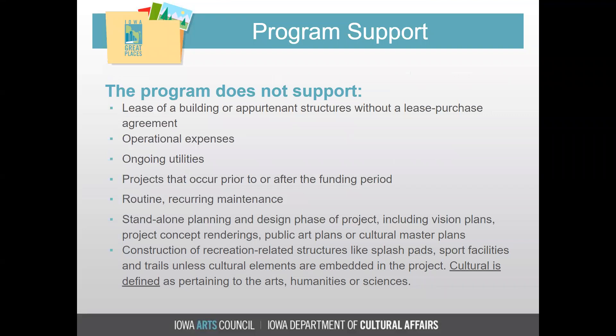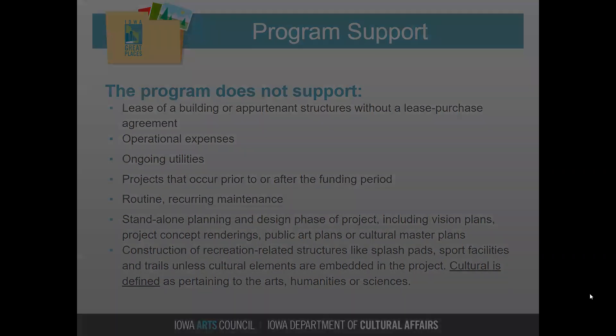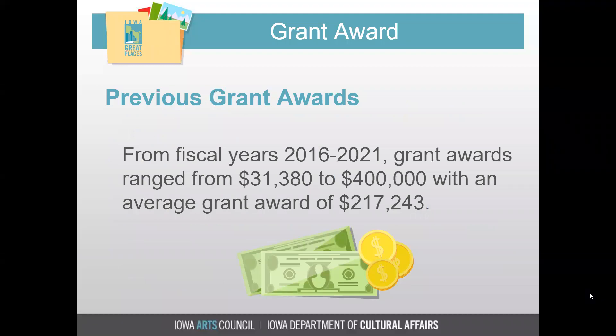Items the program does not support include leases of buildings, operational expenses, ongoing utilities, or projects that occur prior to or after the funding period, routine or recurring maintenance, stand-alone planning and design phases such as vision plans, project concept drawings, public art plans or cultural master plans, and construction of recreation-related structures like splash pads, sports facilities, and trails, unless cultural elements are embedded in the project. Cultural is defined as pertaining to the arts, humanities, and sciences. For informational purposes, previous grant awards from 2016 to 2021 ranged from $31,000 to $400,000, with an average grant award of $217,000.